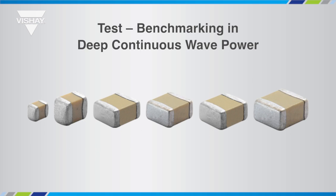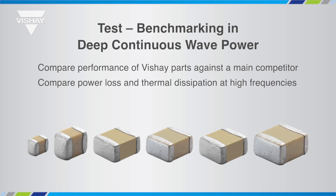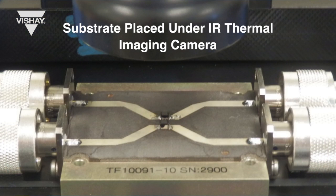In order to prove the excellent performance of Vishay's High Frequency and Quad High Frequency product series, a benchmark test was developed to compare and visualize performance against a main competitor, comparing power loss and thermal dissipation at high frequencies. The same power is supplied to similar capacitors of case size 1111 — one Vishay and one leading competitor — located on a symmetrical substrate. This fixture is placed under an IR thermal imaging camera to record the temperature rise of both capacitors under the same power and frequency conditions.